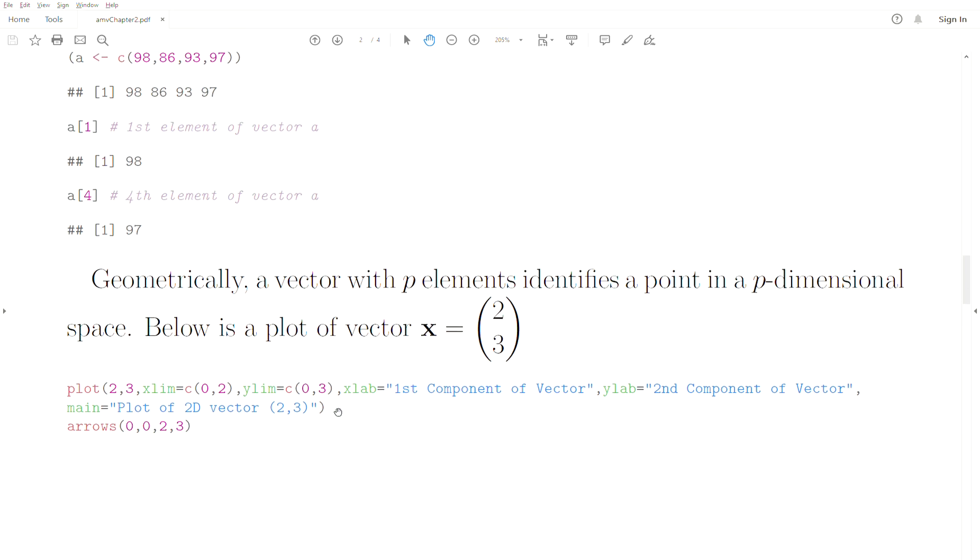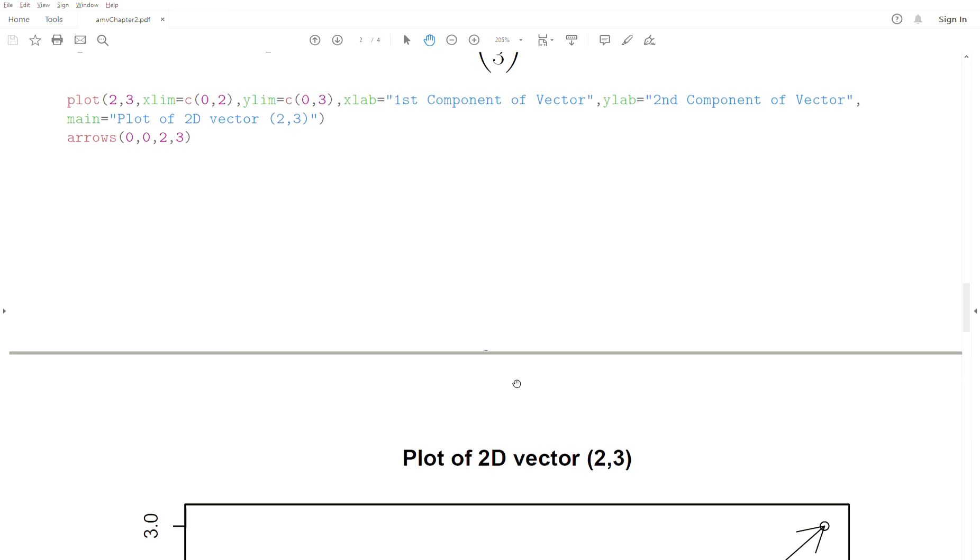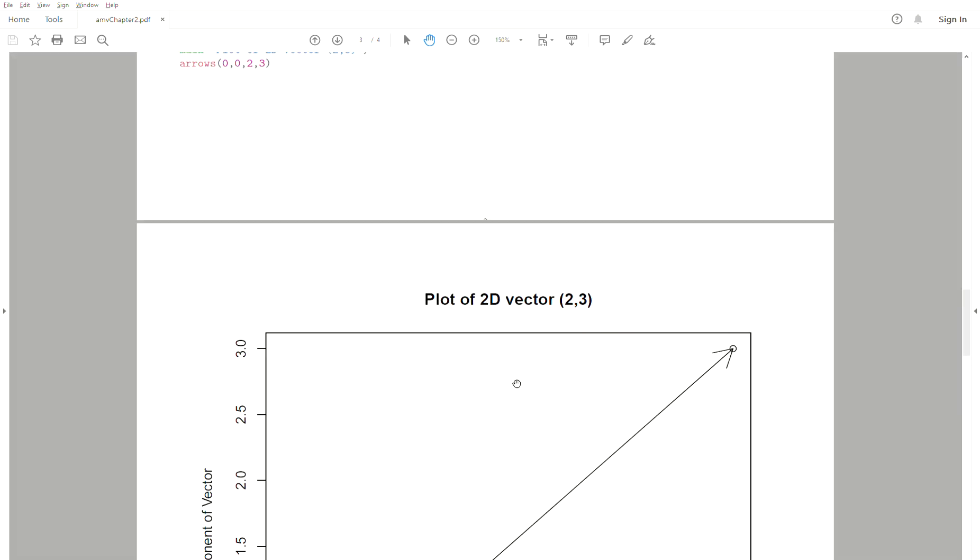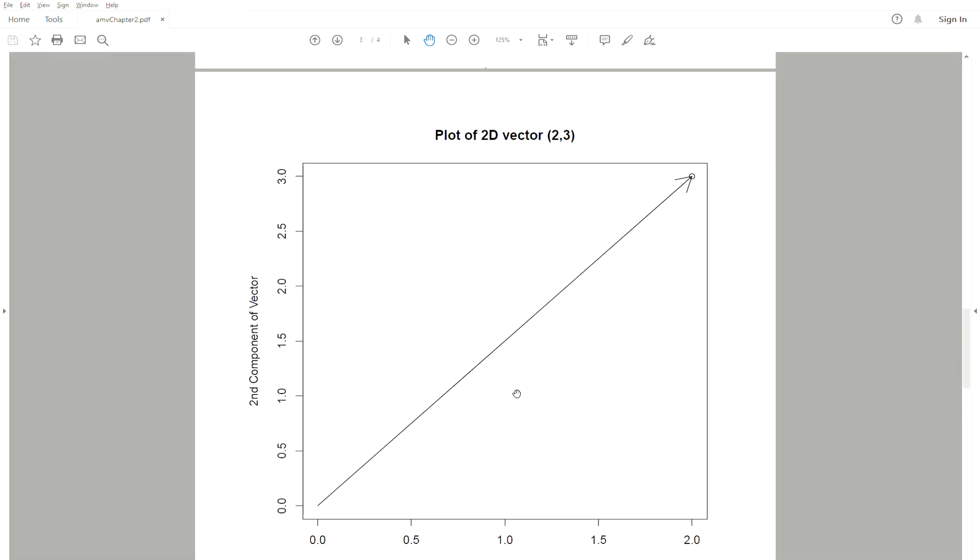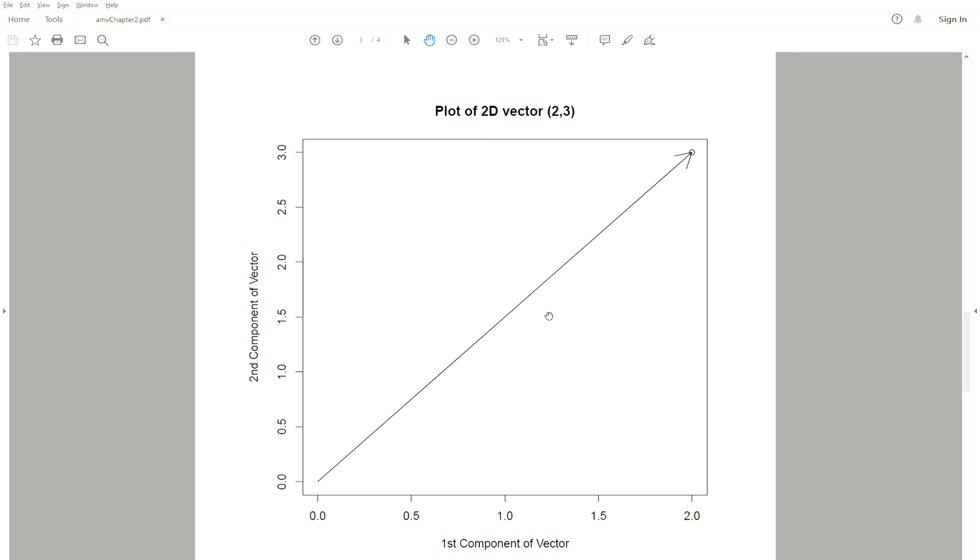Vectors have a geometric meaning. They're sort of points in p-space. An example will help illustrate this. Let's plot the vector (2,3). This is a vector of size two, or you could say it's two-dimensional. This is the plot. The vector is (2,3).